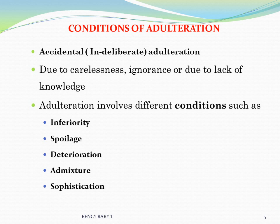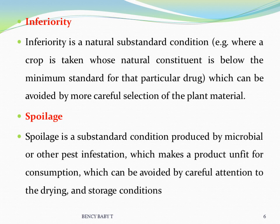Adulteration involves several conditions: inferiority, spoilage, deterioration, admixture, and sophistication. Inferiority is a natural substandard condition where a crop is taken whose natural constituents are below the minimum standard for that particular drug, which can be avoided by more careful selection of plant material.